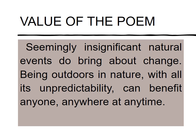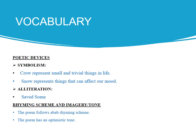Let us proceed to the poetic devices in the poem. First, symbolism: the crow represents small and trivial things in life, and the snow represents things that can affect our mood. Next, alliteration, which is the use of consonant sounds in the same line — we have 'same' and 'some.' We then have synecdoche, a figure of speech in which a part is made to represent the whole or vice versa — used where the poet says 'his heart,' referring to his mood, which actually represents his entire personality. The poem follows an ABAB rhyming scheme.